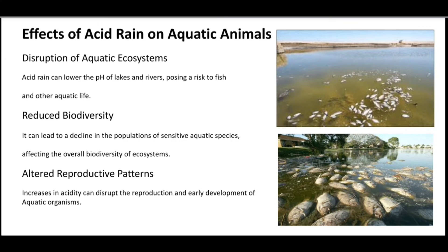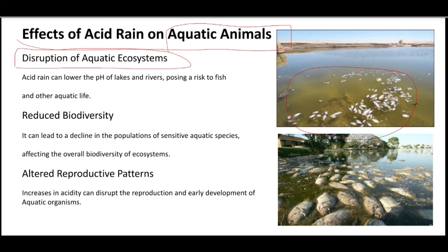Now let's talk about the effects of acid rain on aquatic animals. Aquatic animals — fish being a great example — are disrupted by acid rain through disruptions of the aquatic ecosystem. Acid rain can lower the pH of lakes and rivers, posing a risk to fish and aquatic life. The increased acidity of water makes survival very difficult for fish.